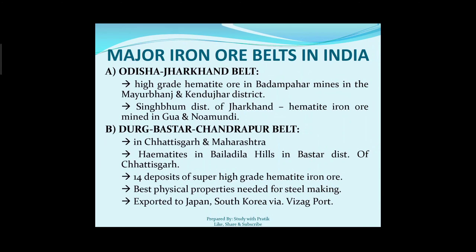Now we will talk about the major iron ore belts in India. The first is the Odisha-Jharkhand belt. High-grade hematite ore is found in Badampahar mines in the Mayurbhanj and Kendujhar districts. In the Singhbhum district of Jharkhand, hematite iron ore is mined in Gua and Noamundi — this area yields very good quality iron ore in abundant quantities.